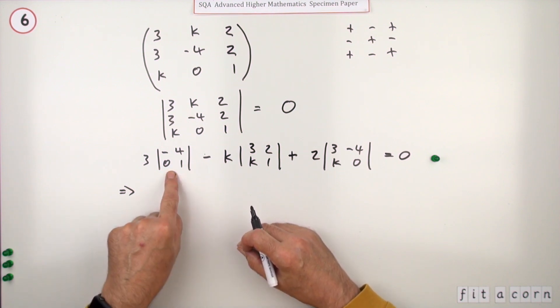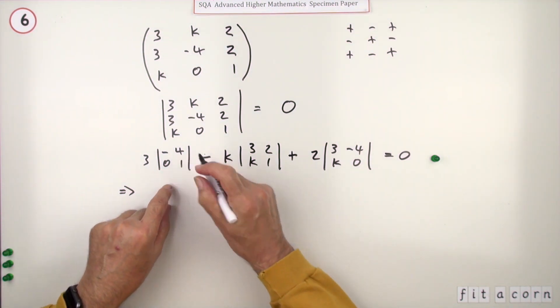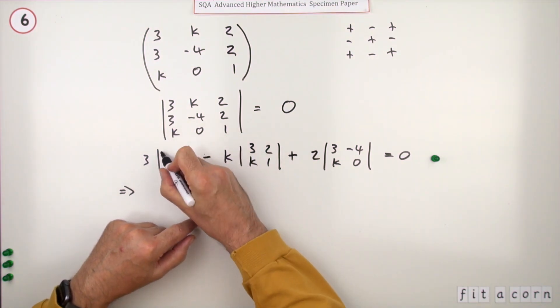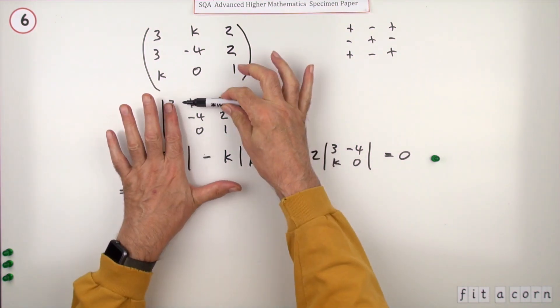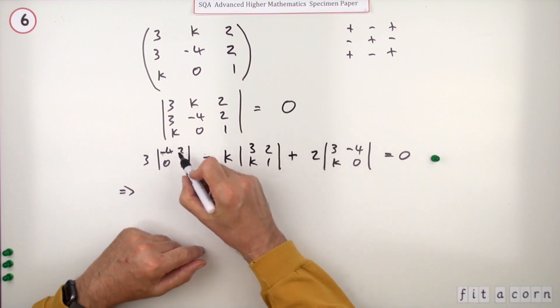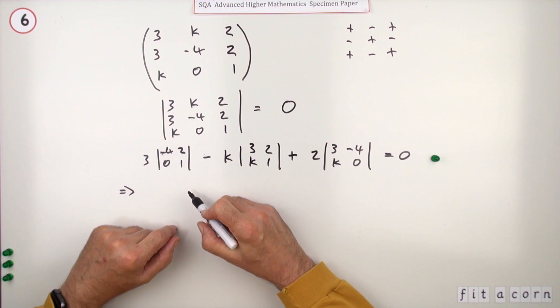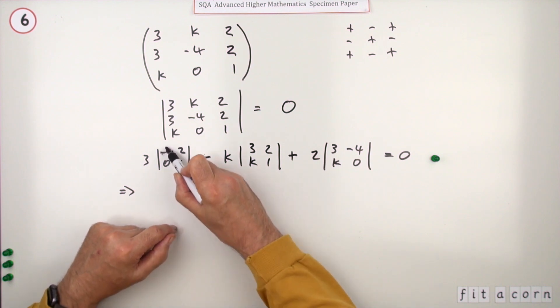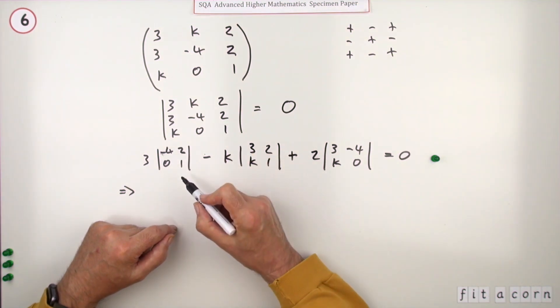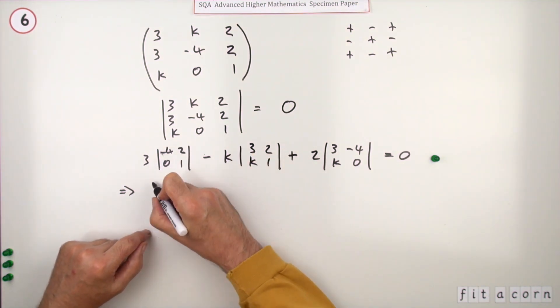So what have you got all together? Well that was a wee mistake there - that was negative 4, 2 wasn't it for that one? Negative 4, 2, 0, 1. Main diagonal minus the other diagonal: negative 4 take away nothing's negative 4, so that makes that negative 2. I'll just put them down: 3 times negative 4.